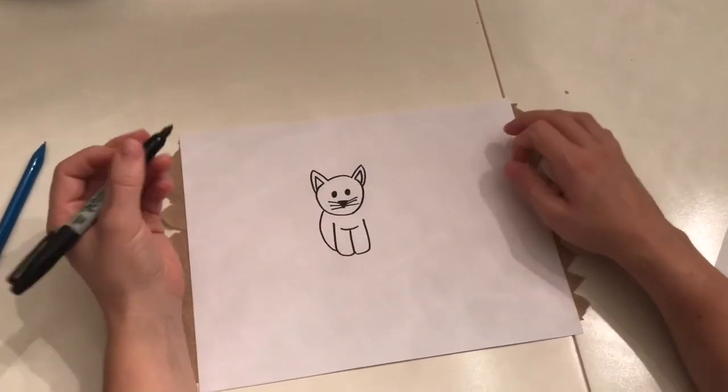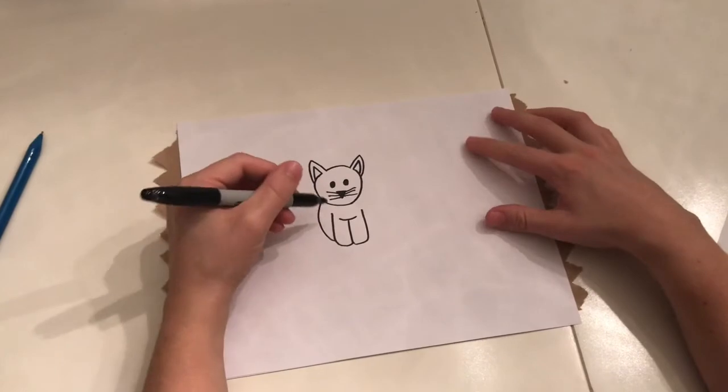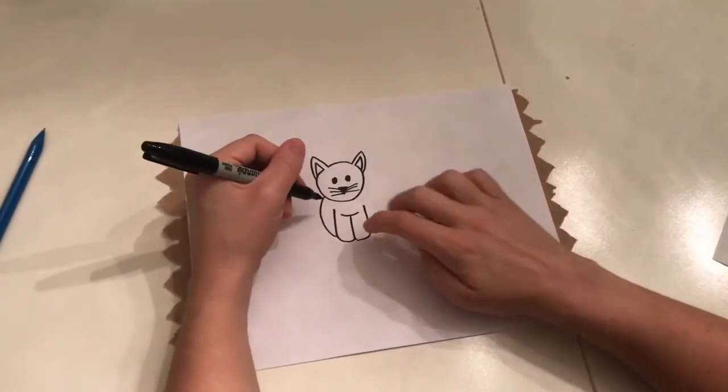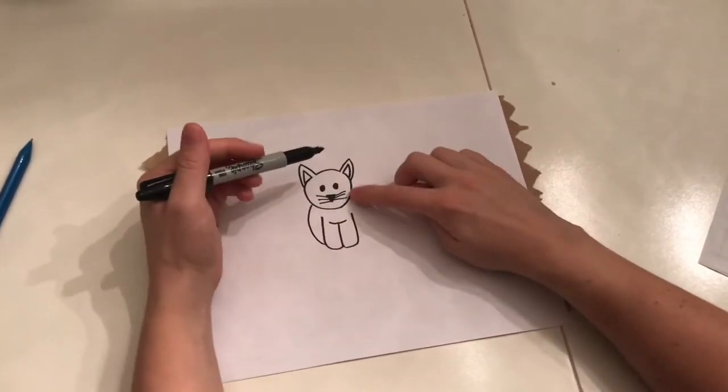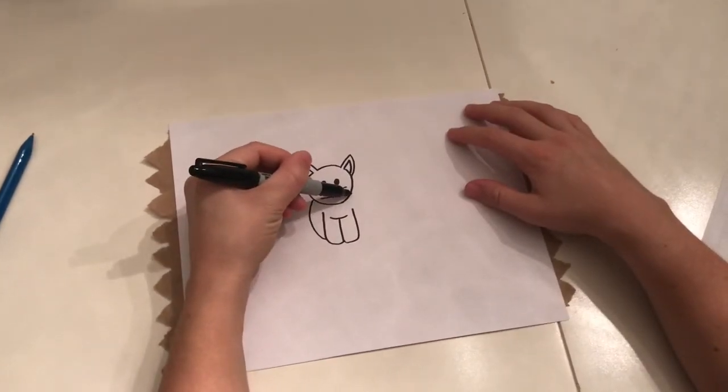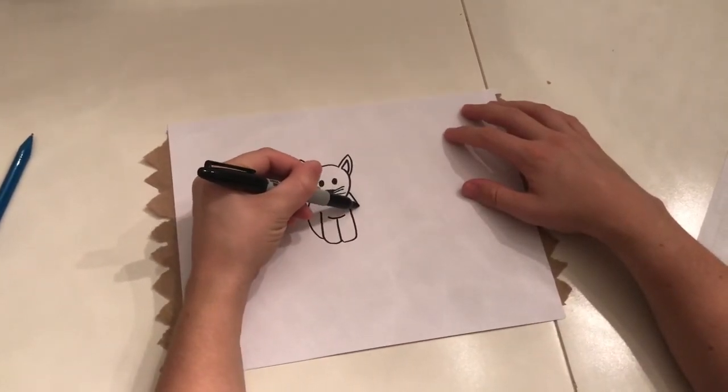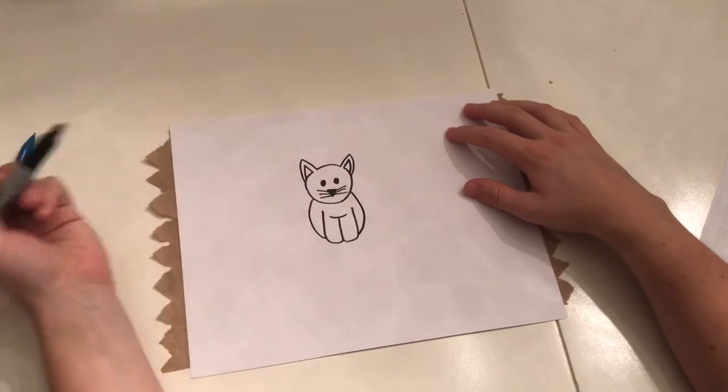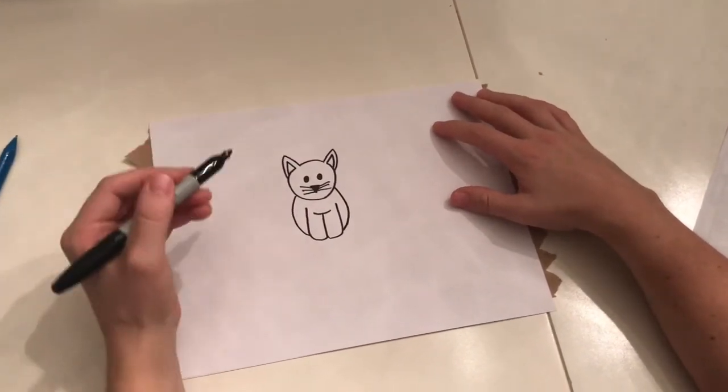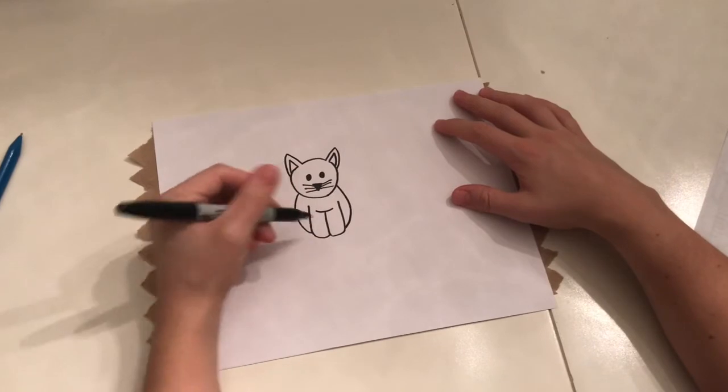Boop. So he's just kind of. He's sitting and chilling. You can't see his back feet or anything. Because they're behind these ones. So we're going to do the same thing on this side. Start up at the cheek. And you go down to a little bit above the paw.